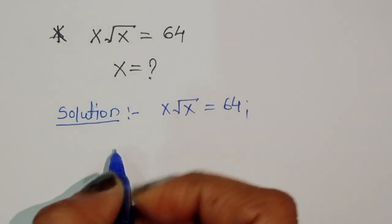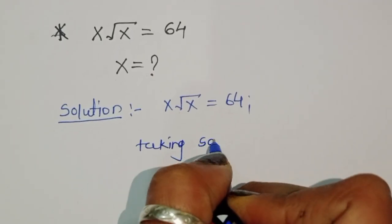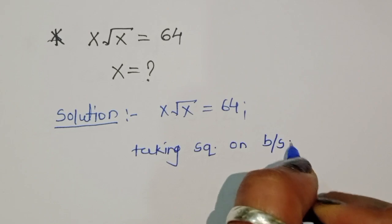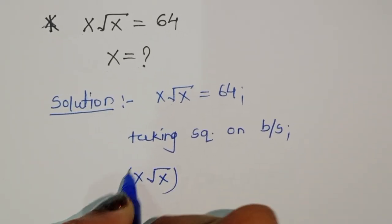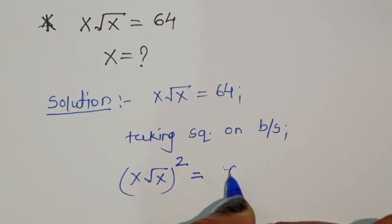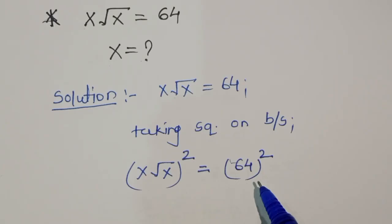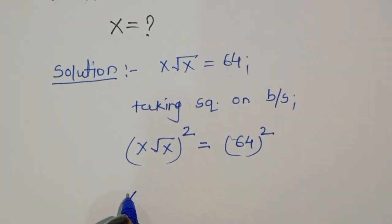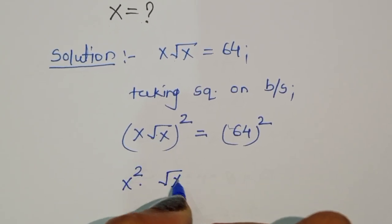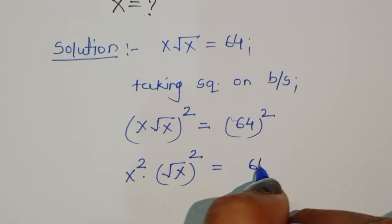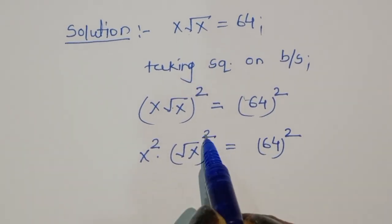So we take square on both sides. Taking square on both sides, we get x times square root of x, the whole squared, is equal to 64 squared. This we can write as x squared times square root of x, the whole squared, is equal to 64 squared.